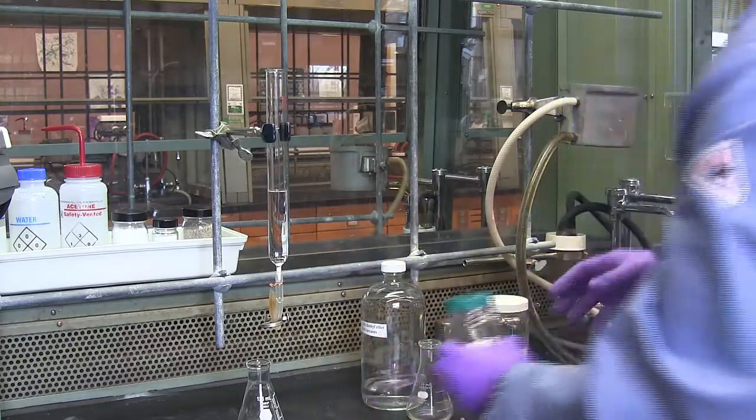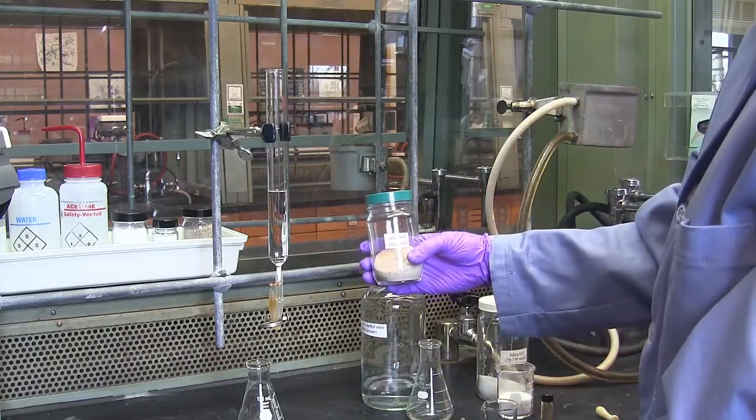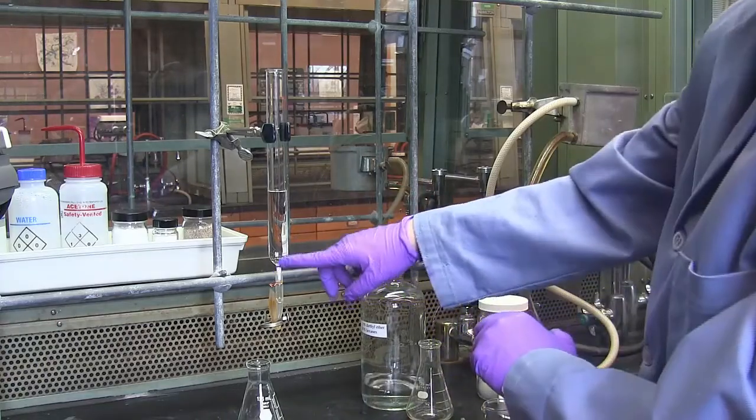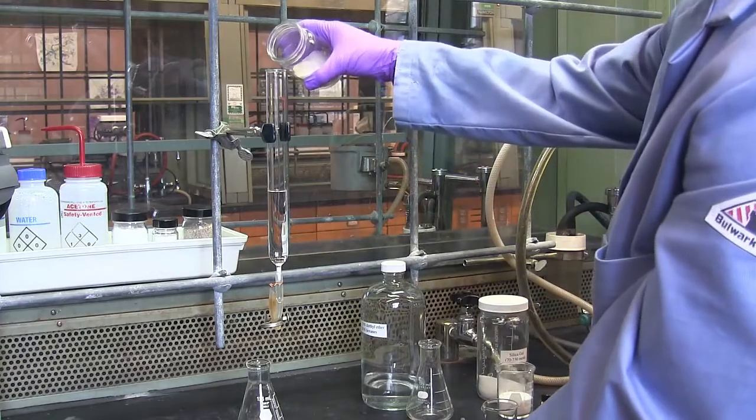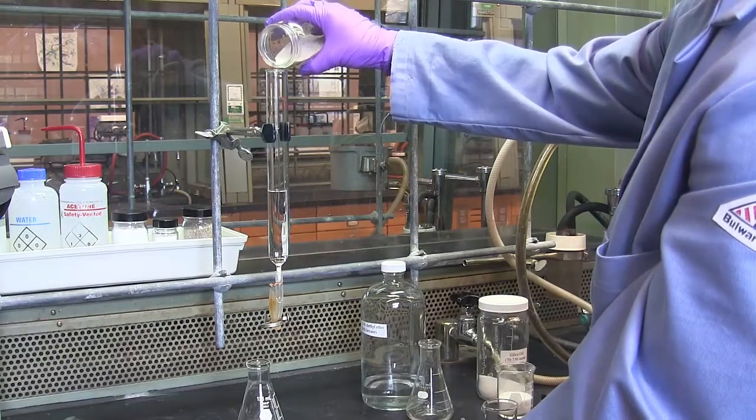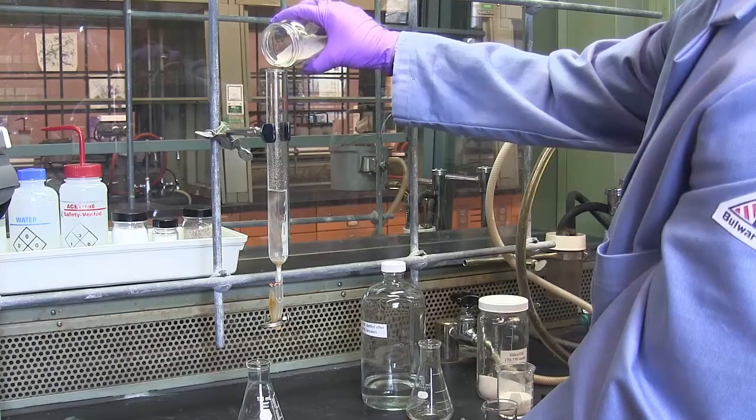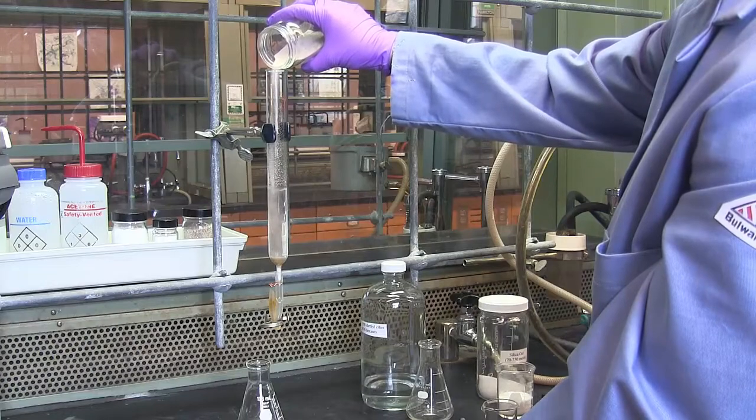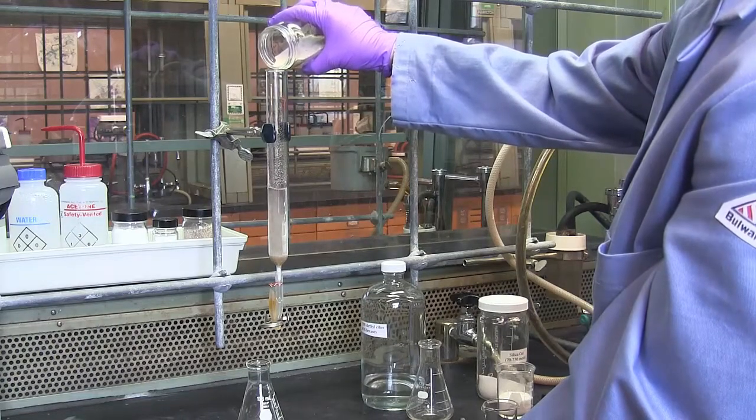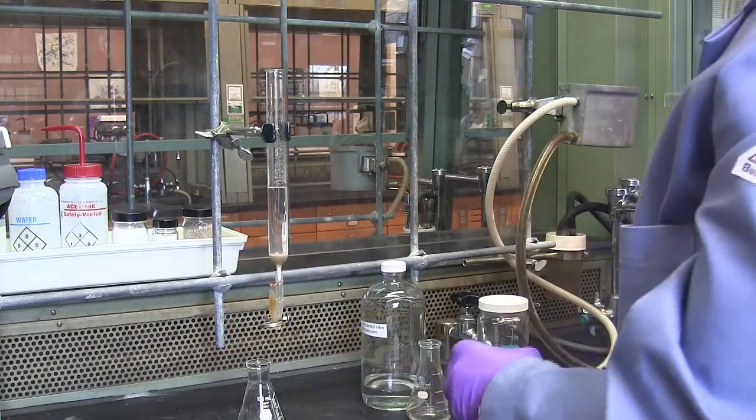And then to create an even bottom on the column, I want to add sea sand to the column just over the curved portion of the column. You do not want to use the playground sand that's in the back of your hoods. You want to use nice, clean sea sand. So I'll add it to about a 1 cm or so depth, just to clear the curved portion of the column.